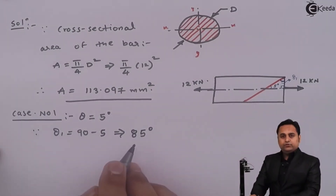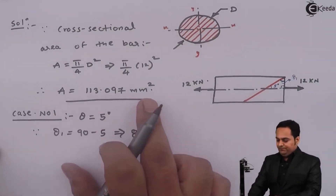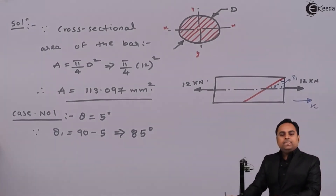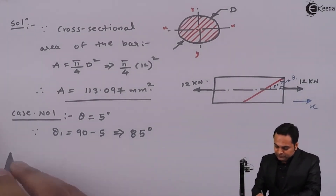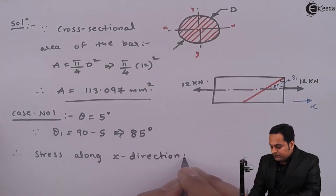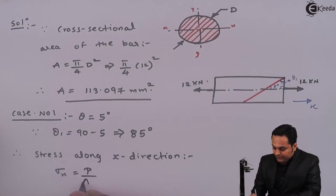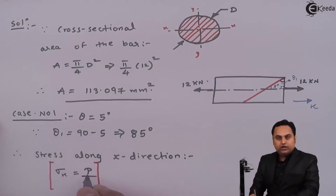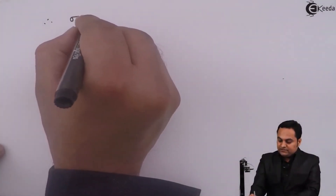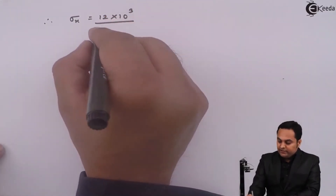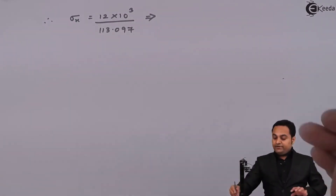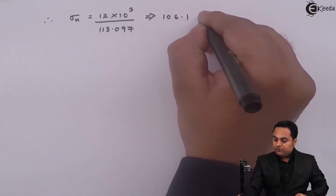This is theta 1 which we are going to use in the calculation. The load is given along the x direction, so I will calculate the stress along the x direction. Stress along x direction, sigma x = load / area. The load along x direction is 12 kilonewton, so sigma x = 12 × 10³ / 113.097, which comes out to be 106.1 N/mm².